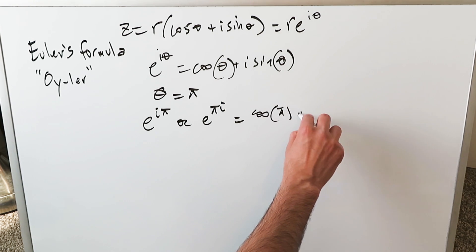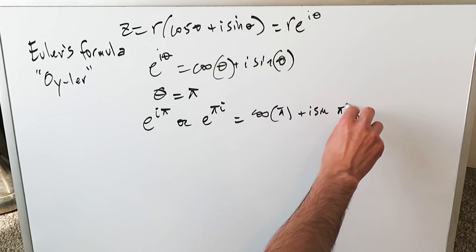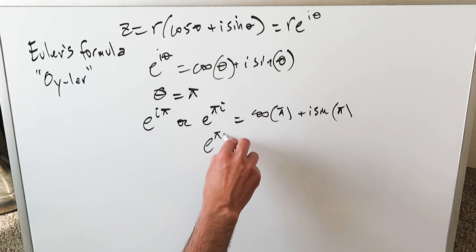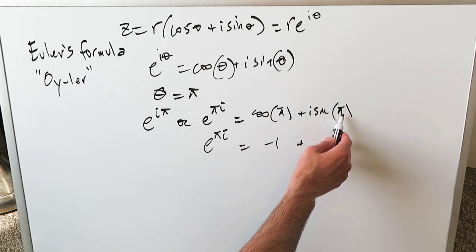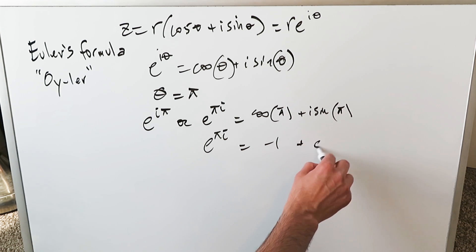Cosine pi plus i sine of that pi. Then you have E to the pi i is equal to... cosine of pi is minus one but sine of pi is zero. It hits with the i and you get zero.